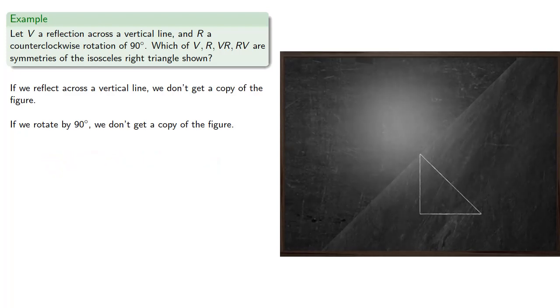If we rotate by 90 degrees and then reflect across a vertical line, we do, so VR is a symmetry.